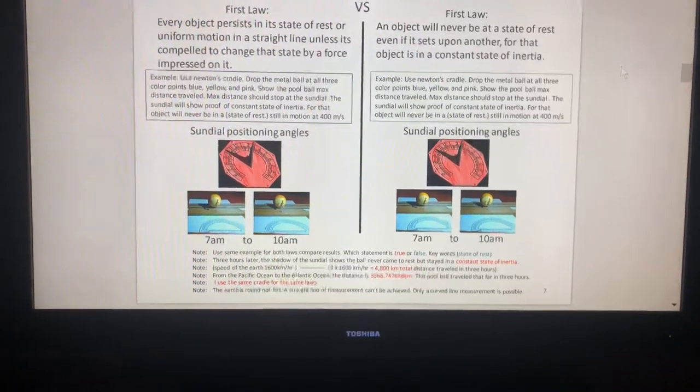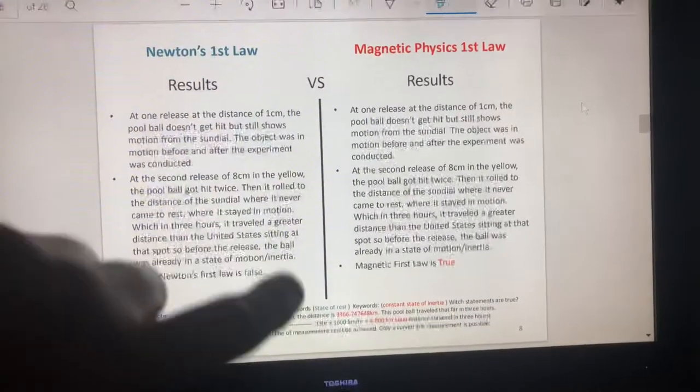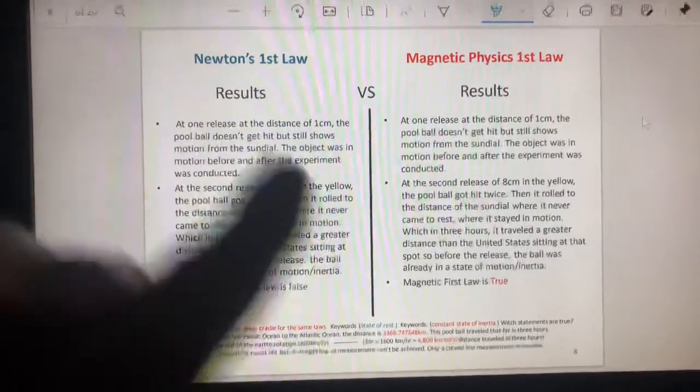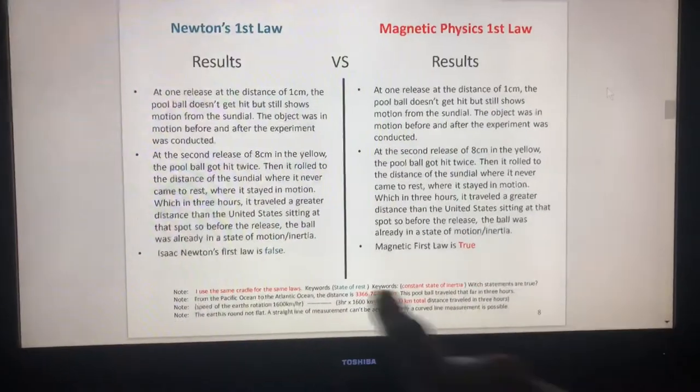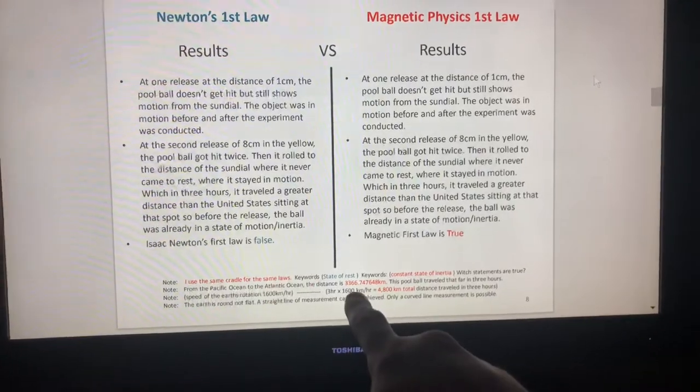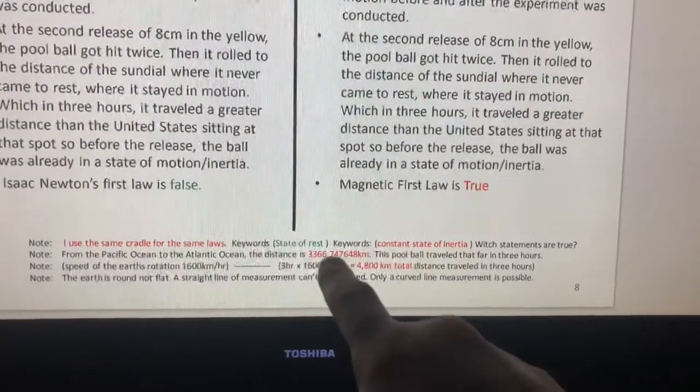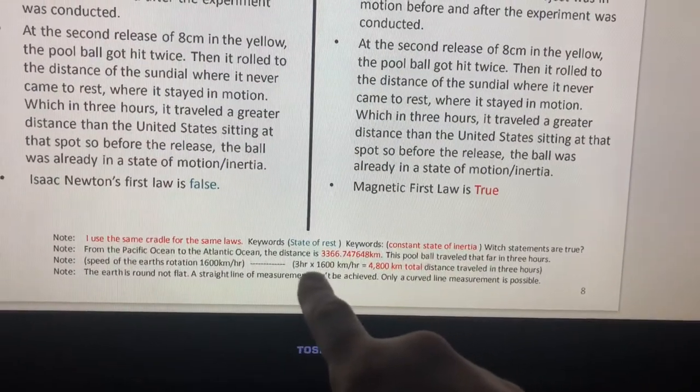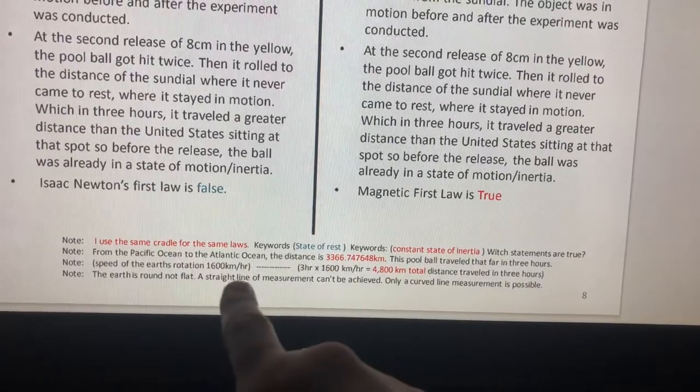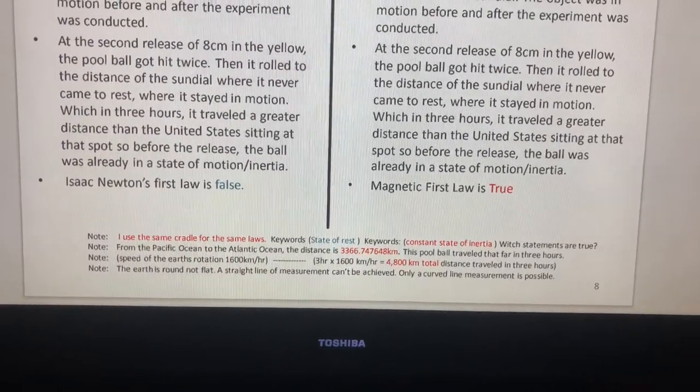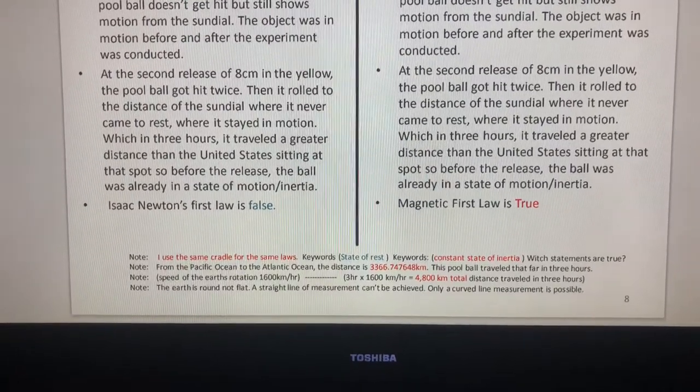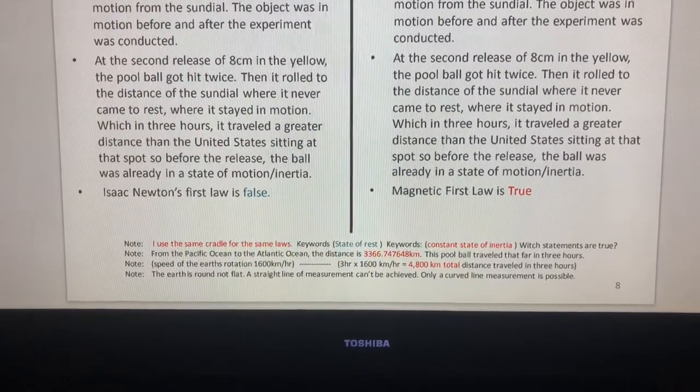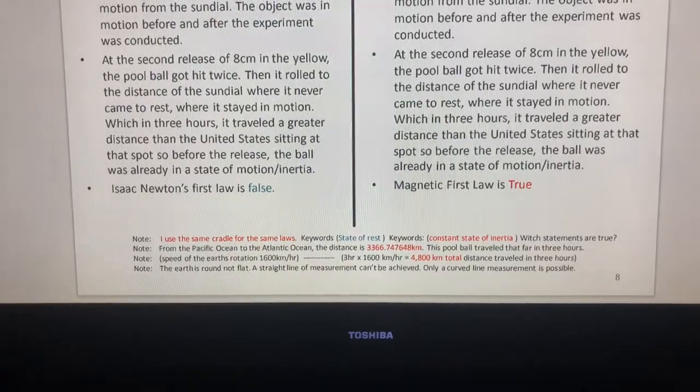That's what I'm explaining is this, is that when I drop the cradle, it hit the pool ball and the pool ball rolled to about where the sundial is, which showed that the pool ball was in motion before and after the initial experiment was conducted because Earth rotates at 1600 kilometers per hour.